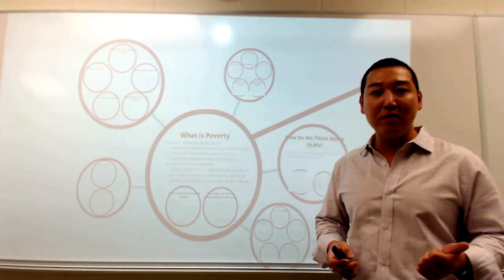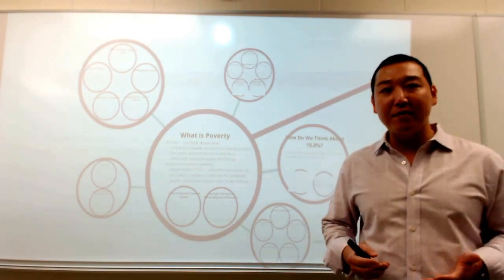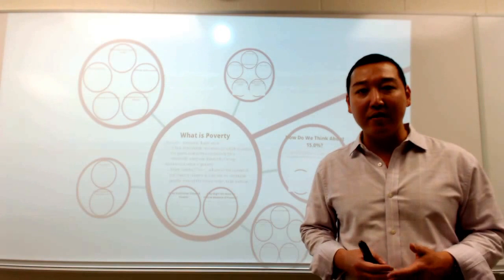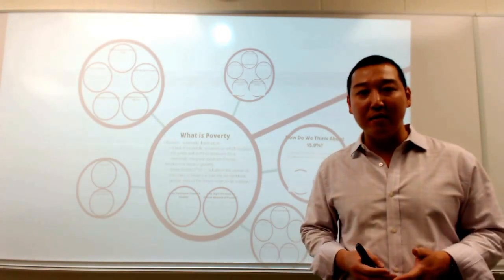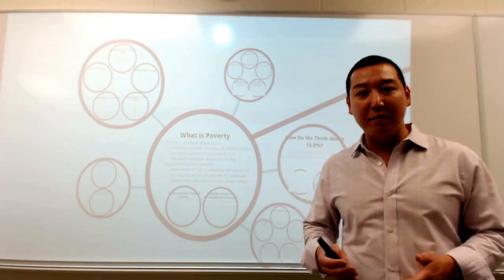Alright, so that's the first set of explanations that we consider, these genetic explanations. The second line of explanations is still centered on individual-level factors, but not attributing poverty to genetic differences per se. But now we're looking at cultural explanations.